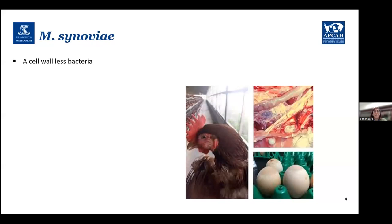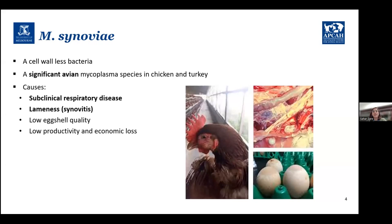Mycoplasma synoviae is a cell-wall-less bacteria which is a significant avian mycoplasma species in chicken and turkey. This bacteria causes subclinical respiratory diseases, lameness, low eggshell quality, and overall low productivity and economic losses for farms. Importantly, birds infected with Mycoplasma synoviae are susceptible to secondary infections such as E. coli and other bacteria, which can cause fatality and further economic losses.